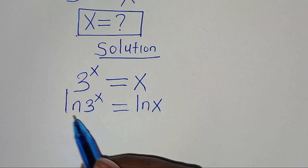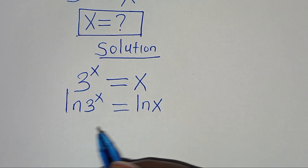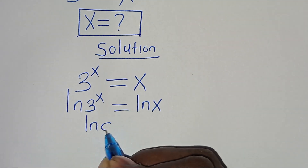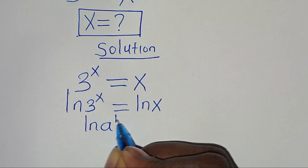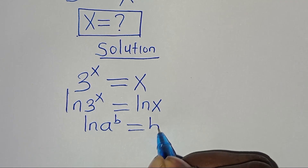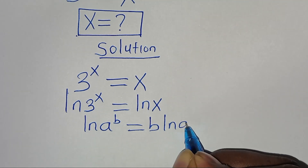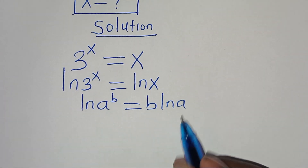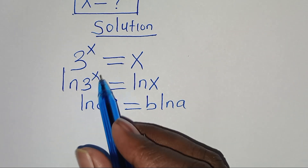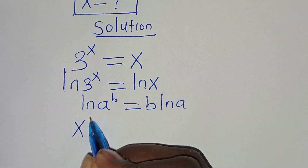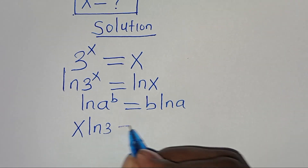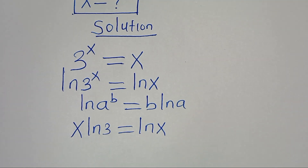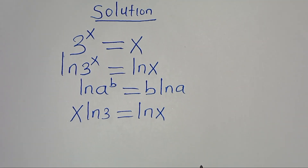Now, ln of 3 to the power of x is in the form ln(a^b), which we can express as b·ln(a). Applying this property, ln of 3 to the power of x becomes x·ln(3), and this is equal to ln(x).